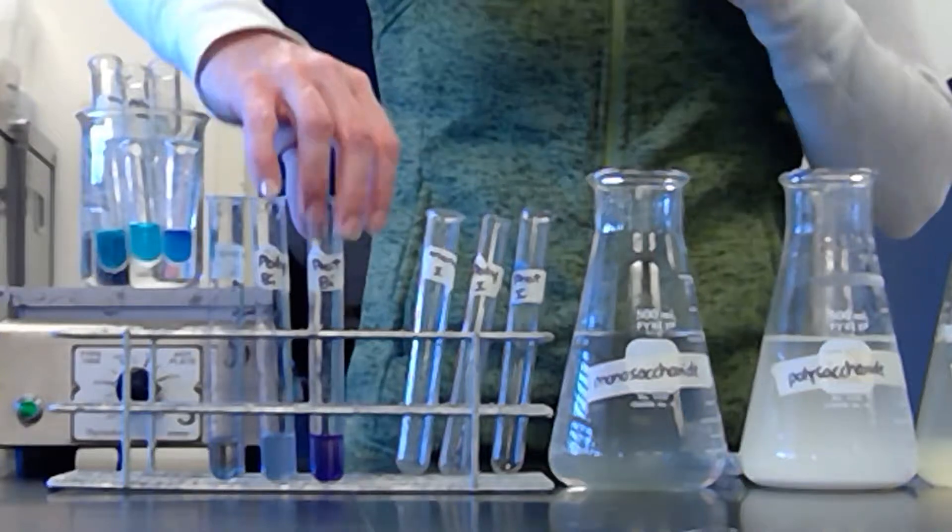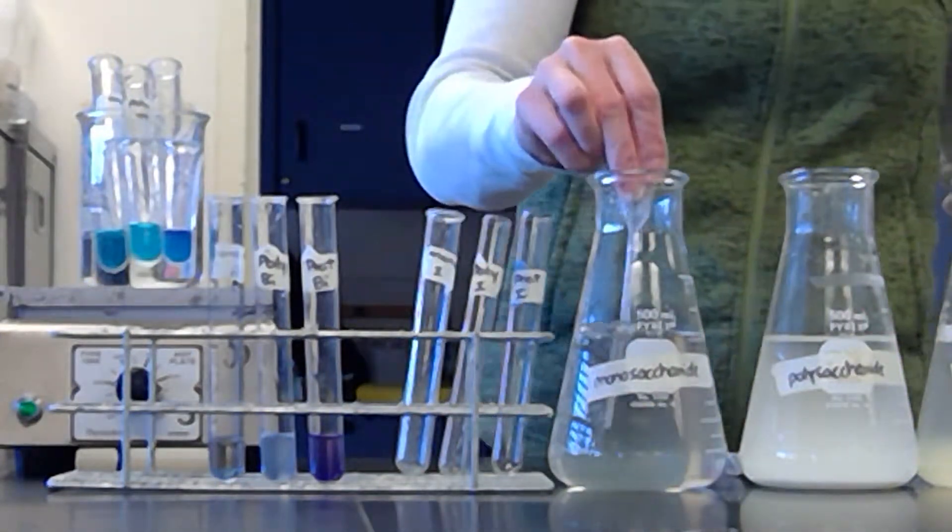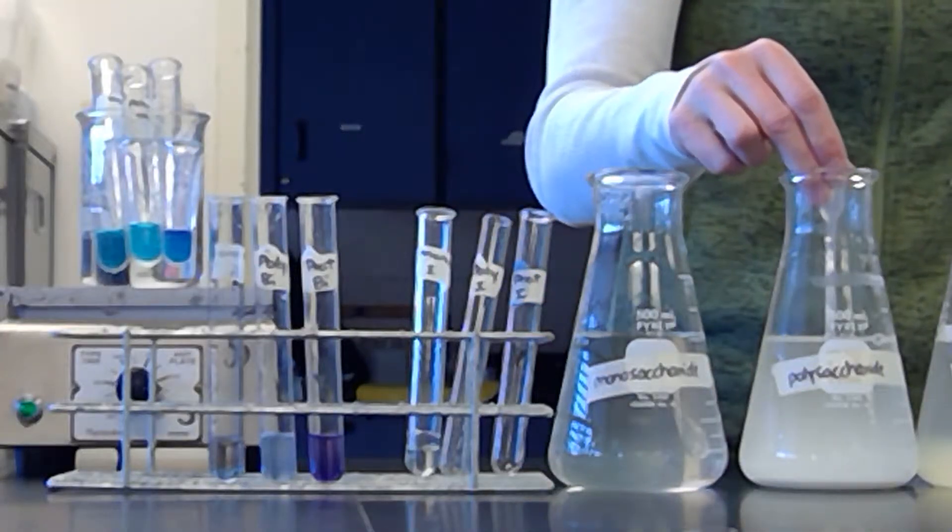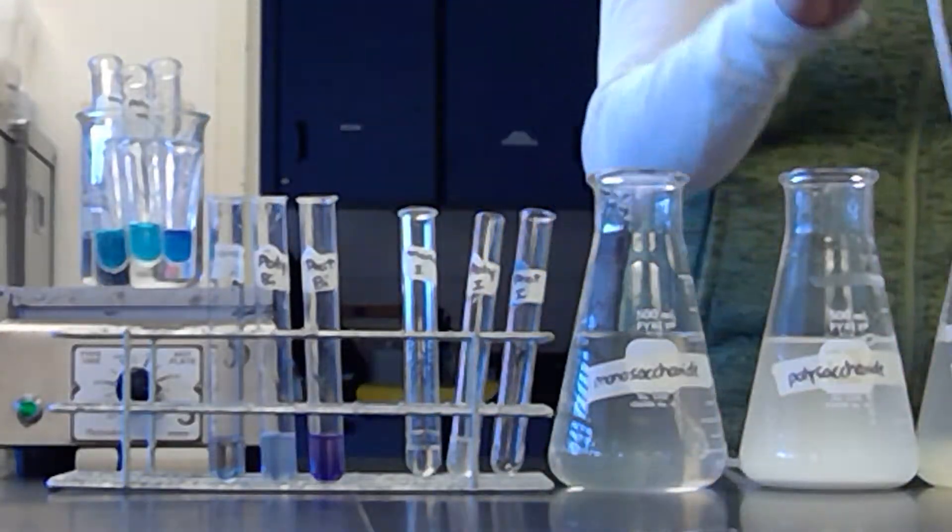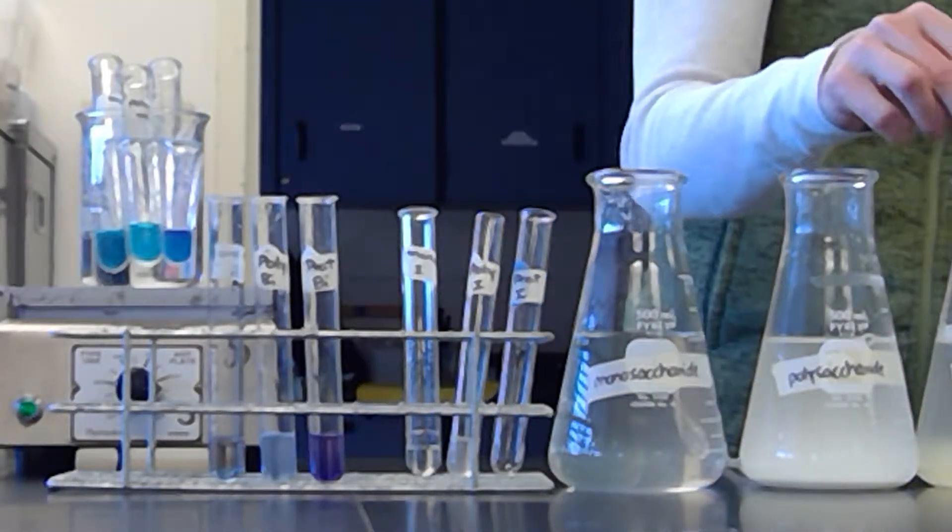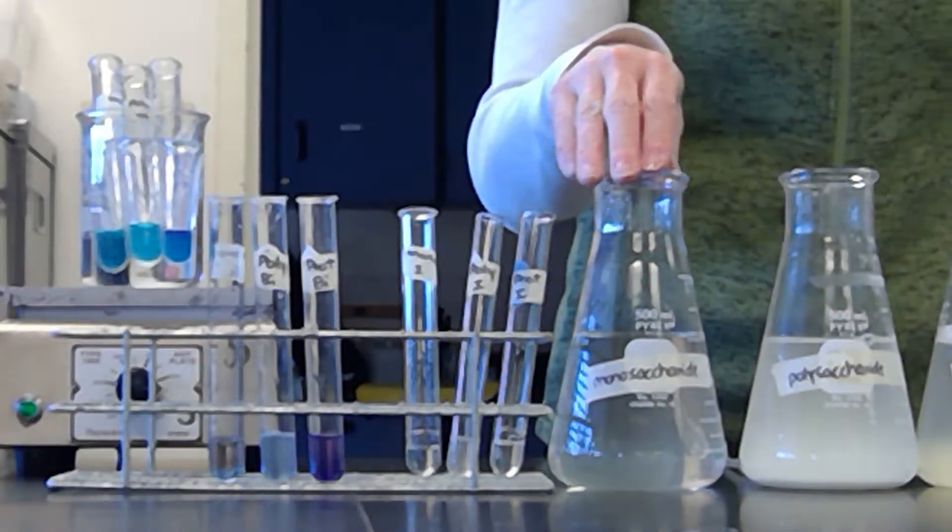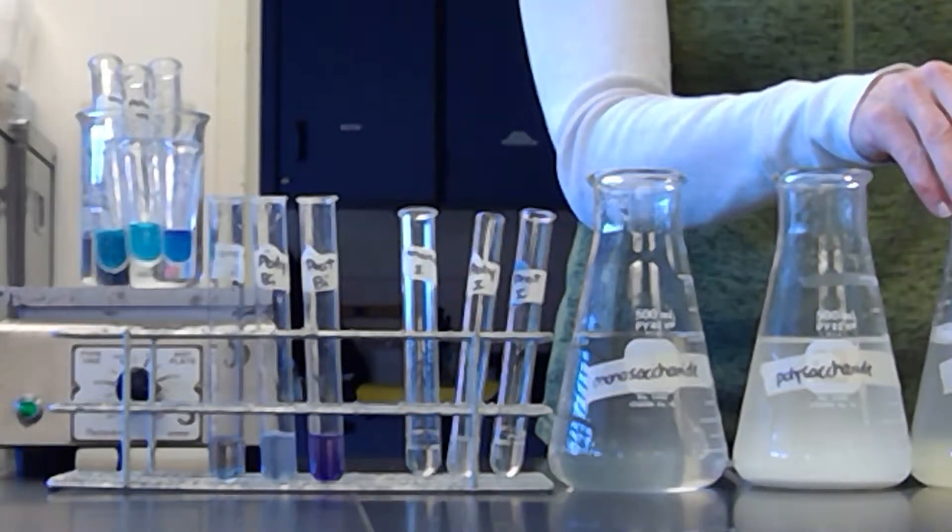And so the biuret, which is what these three tubes are, tests for protein because the tube, this protein is the one that came up positive. And so now we'll do iodine. We'll do a squirt of monosaccharides, a squirt of polysaccharides, and a squirt of proteins.